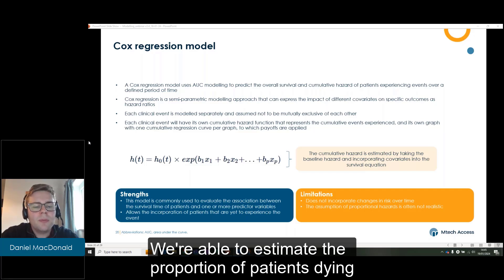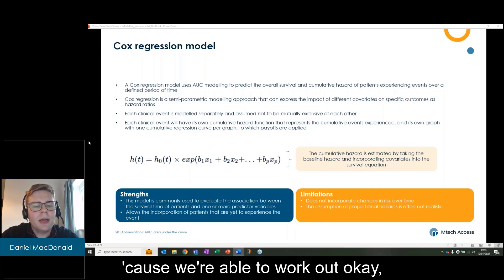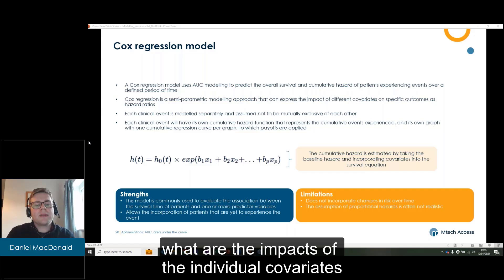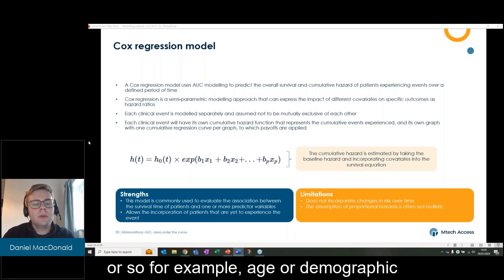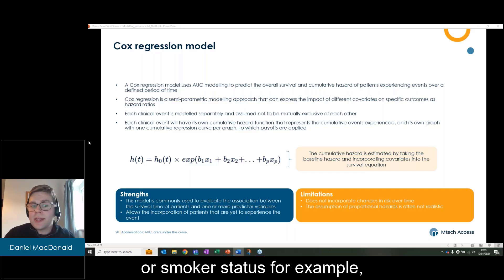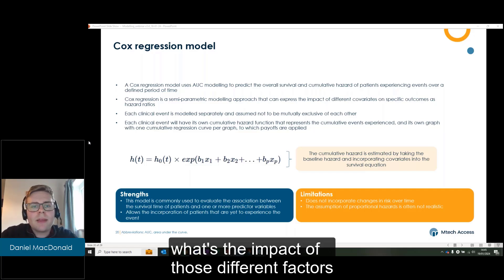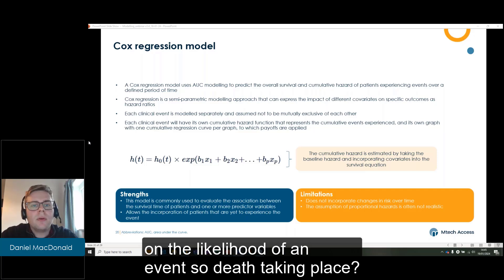We were able to estimate the proportion of patients dying because we were able to work out what are the impacts of the individual covariates, for example age or demographic or smoker status, what's the impact of those different factors on the likelihood of an event, so death taking place.